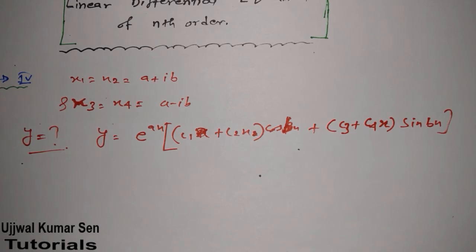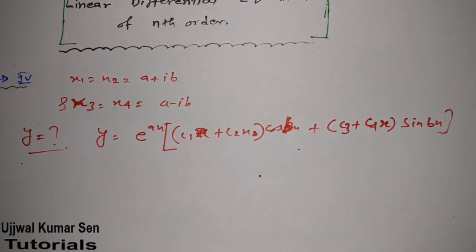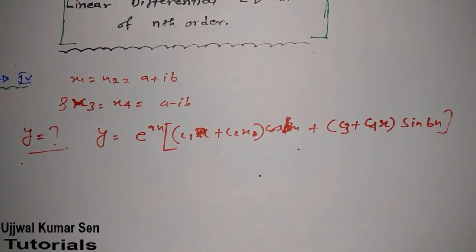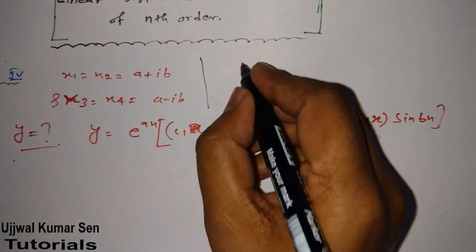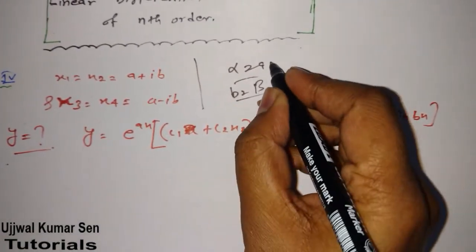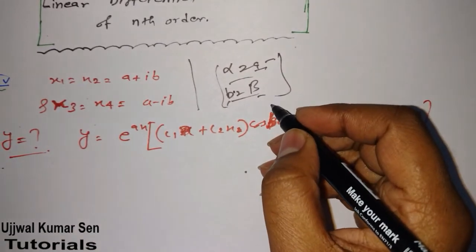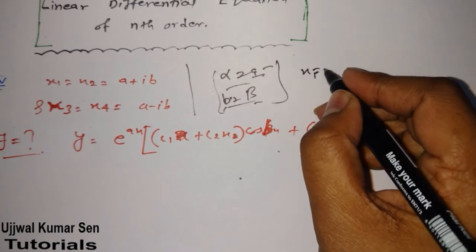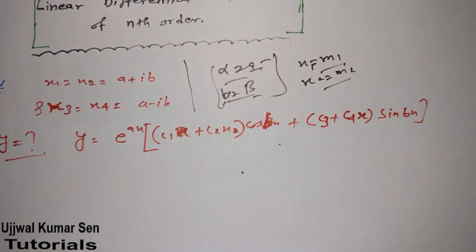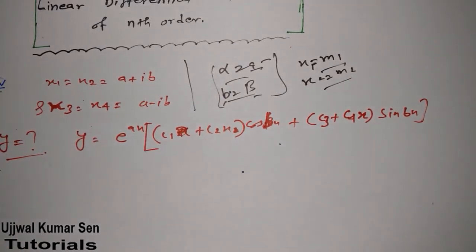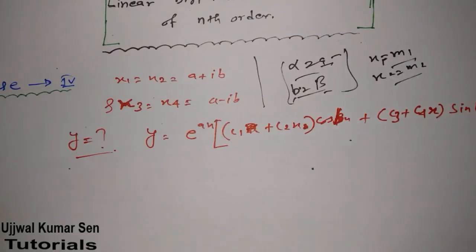You can also write e^(mx) or e^(x) depending on your notation — that is up to you. One thing I have noticed in many books: they use a = alpha and b = beta instead of a and b, but both are the same. Similarly, some books use m1 and m2 instead of x1 and x2. The concept I am sharing here is the key concept to solve problems without confusion.